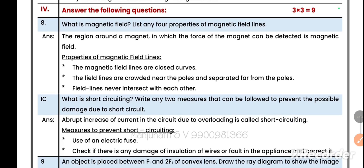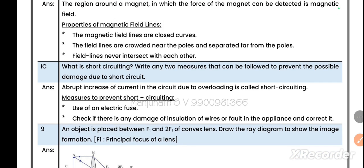Question number four: answer the following questions, each carrying three marks. Total three questions for nine marks. What is a magnetic field? List any four properties of magnetic field lines. The region around a magnet in which the force of the magnet can be detected is a magnetic field. Properties of magnetic field lines: magnetic field lines are closed curves like eccentric circles. The field lines are crowded near the poles and separated far from the poles. Field lines never intersect with each other.